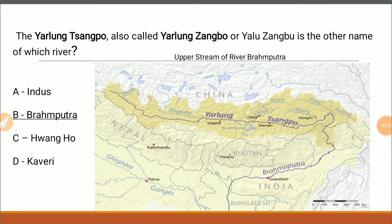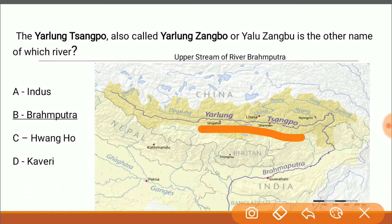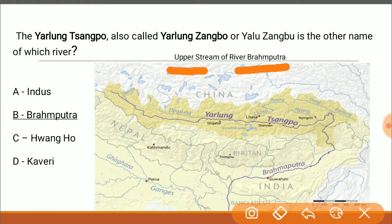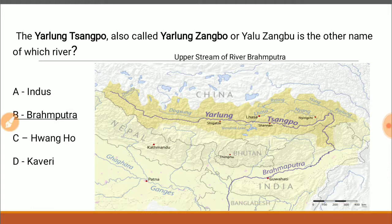Our question here is: the Yarlung Tsangpo is the other name of which river? As you can see on the map, the Yarlung Tsangpo flows through the Tibet Autonomous Region of China and then comes down into India. Basically, the Yarlung Tsangpo is the upper stream of the river Brahmaputra — when it flows in Tibet from its origin, it is known as the Yarlung Tsangpo.